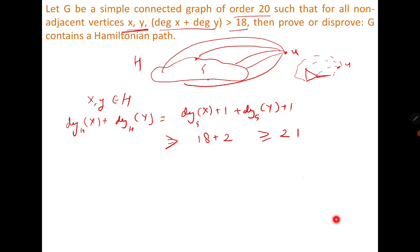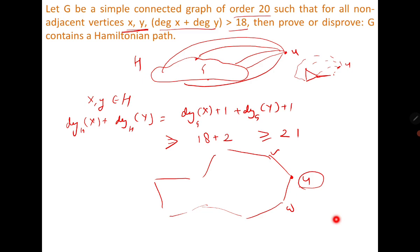H is Hamiltonian, so it must have a Hamiltonian cycle passing through all vertices. In this cycle, u is adjacent to two vertices — say v and w. If you delete u from the cycle, then in the remaining graph G you have a path starting from v and reaching w, which is the Hamiltonian path. It means G has a Hamiltonian path — the result is proved.